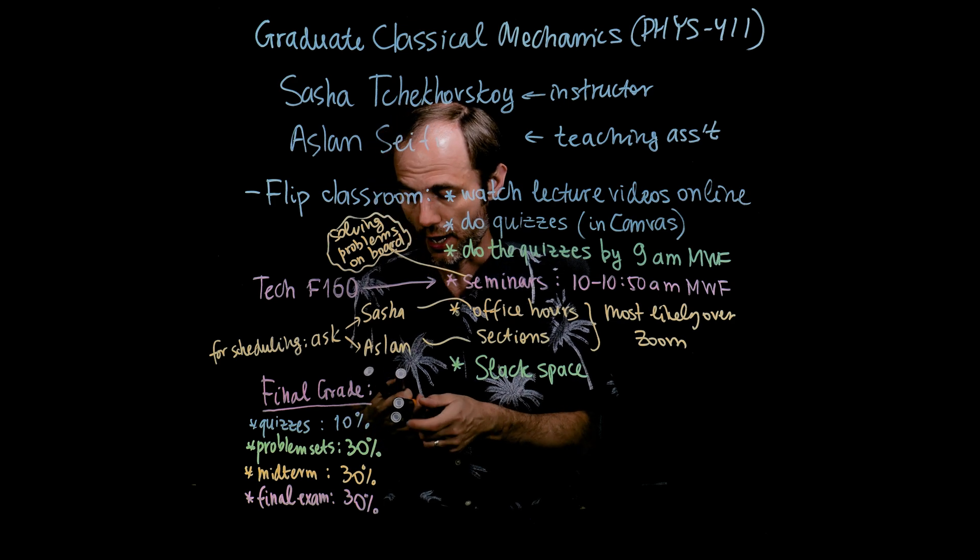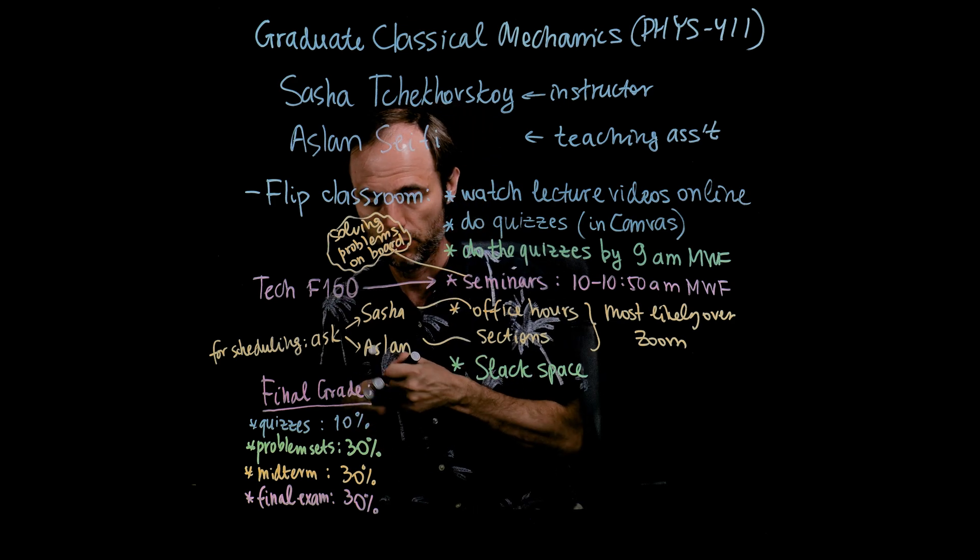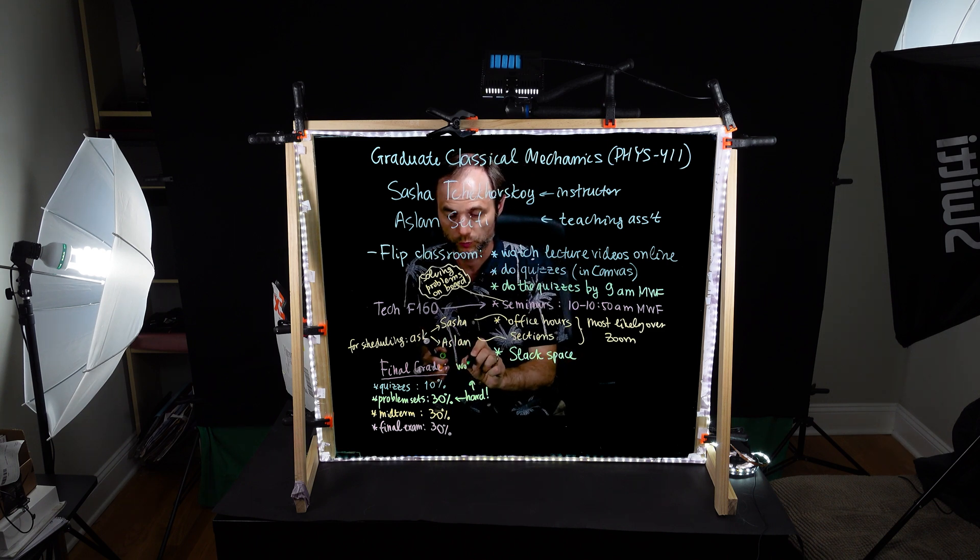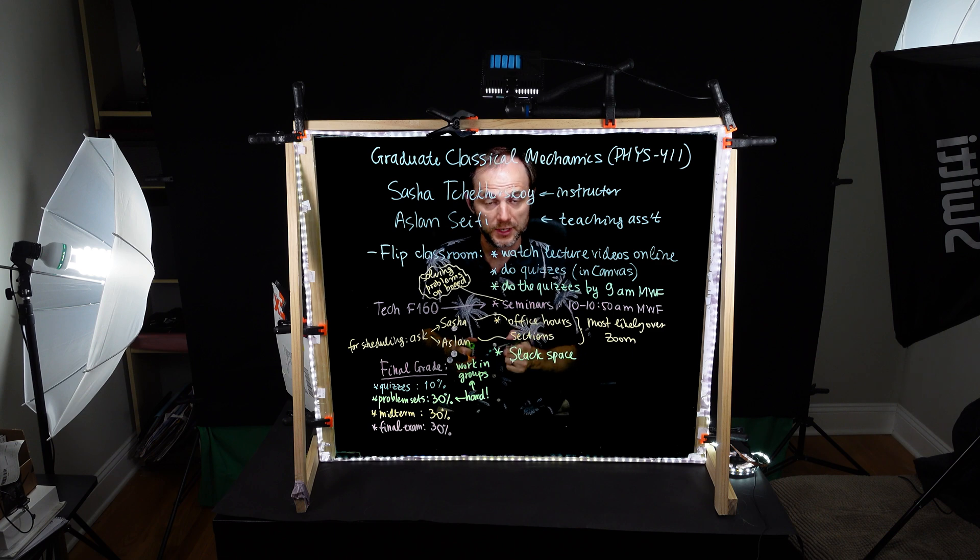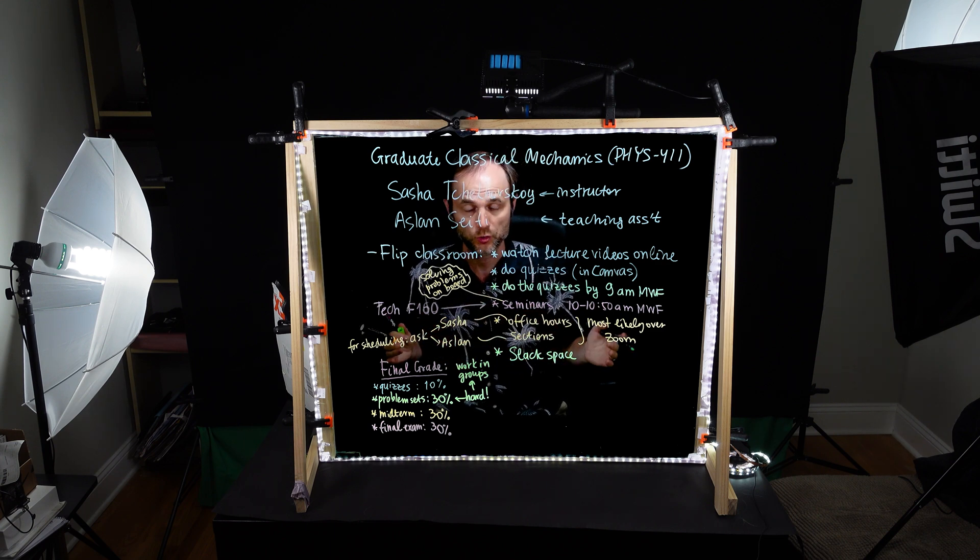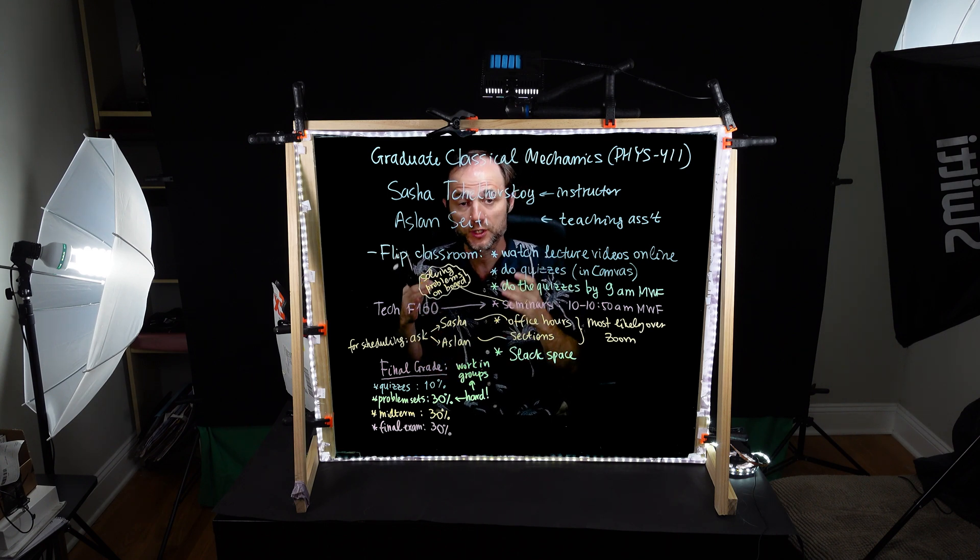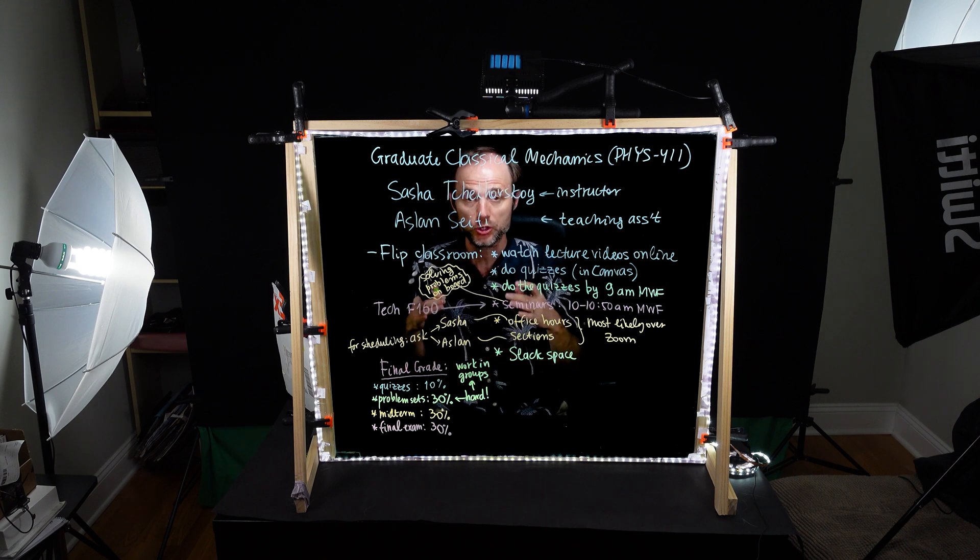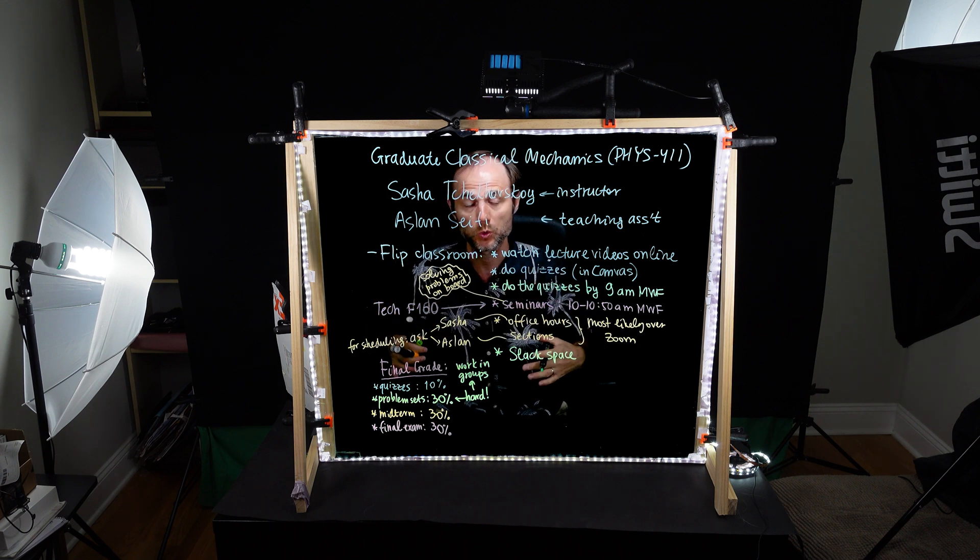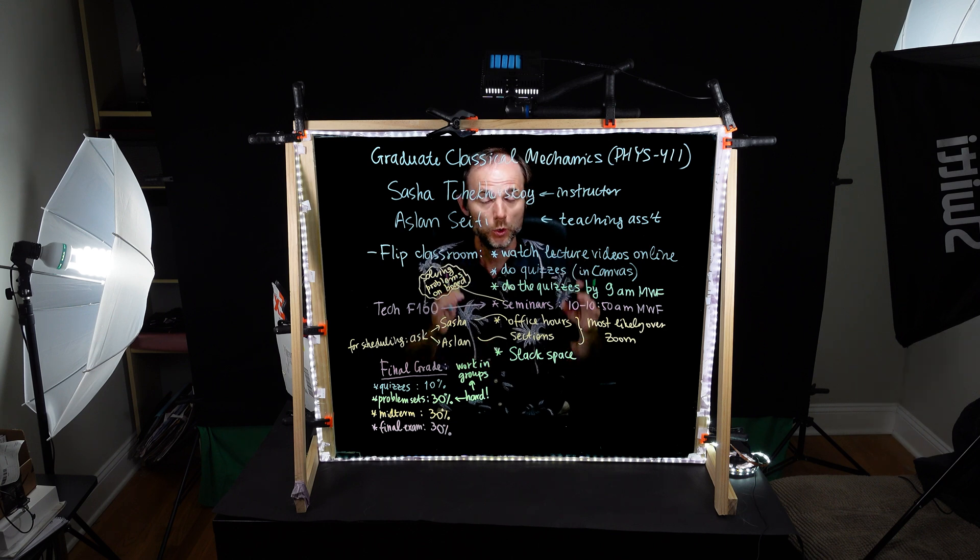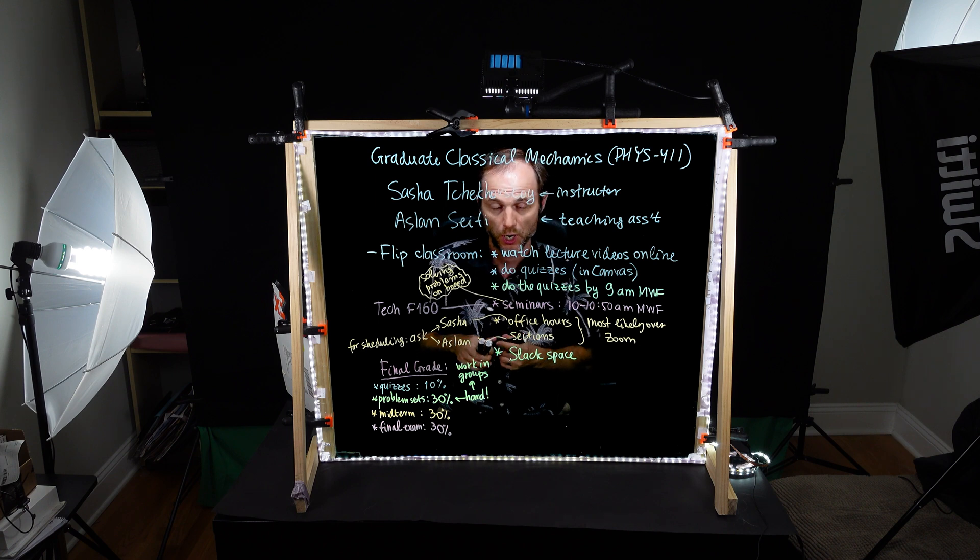So the problem sets are actually going to be very hard, at least some of them. So my suggestion is that you work in groups. So what does that mean? It means that you can discuss all the material, you can discuss the solutions to the problem set. But once you start writing it up, it should be your own work. So you cannot copy the solution from the one that you came up together with. You have to sit down and write it with your own hand, with your own thought. Or if you prefer to type it, of course you're welcome to type it up on the computer.